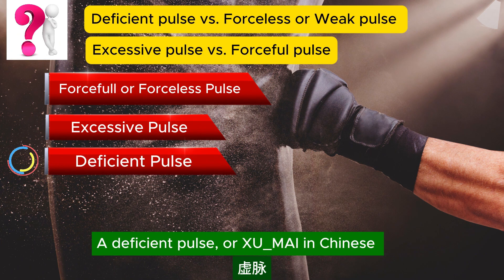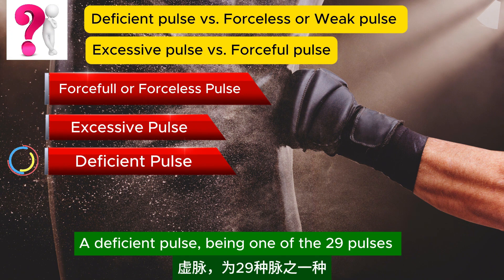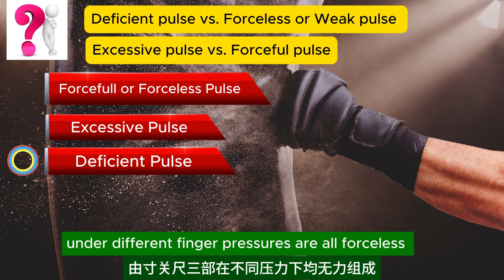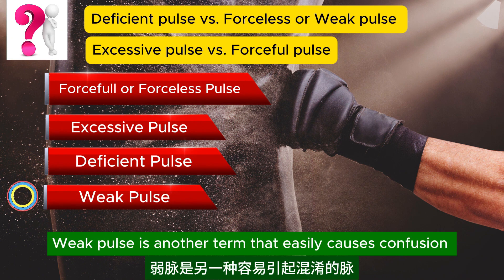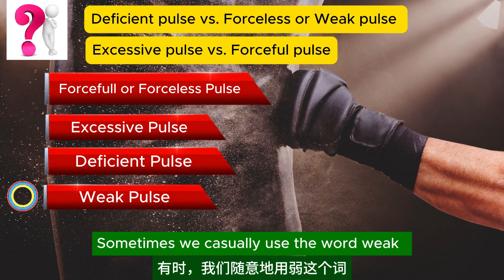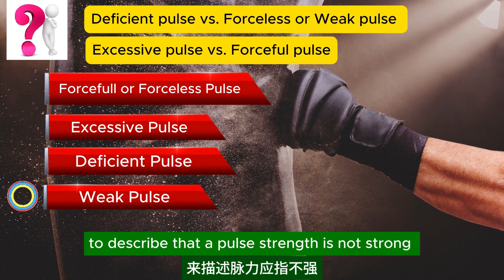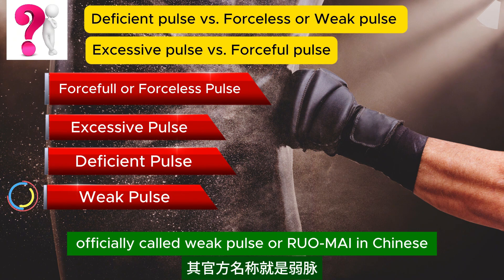A deficient pulse, or xu mai in Chinese, differs from a forceless pulse. A deficient pulse, being one of the 29 pulses, is defined by all cun, guan, chi positions and different finger pressures all being forceless, and can indicate a deficient syndrome. Weak pulse is another term that easily causes confusion. We sometimes casually use the word weak to substitute forceless, but there is a pulse officially called weak pulse, or ruo mai in Chinese.